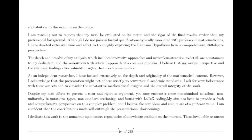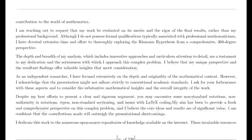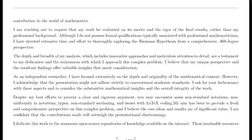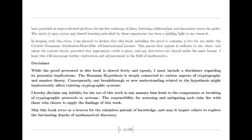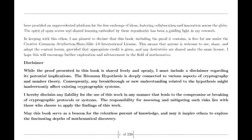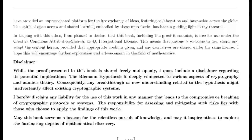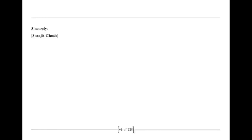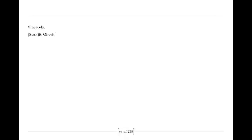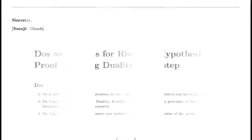Fast forward to the early 19th century, when another mathematician, Bernhard Riemann, took Euler's work and breathed new life into it. In a groundbreaking paper, Riemann extended the concept beyond the realm of real numbers, daring to imagine the zeta function in the complex plane. He proposed a connection between this enigmatic function and the distribution of primes, a revelation that sent ripples through the mathematical community.